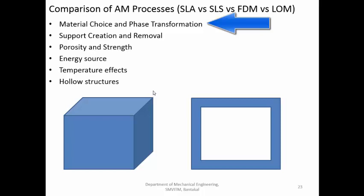Material choice refers to what materials can be used in a particular process, and what kind of phase transformation takes place. In SLA (stereolithography), we can mainly use only photo-polymers, and the phase transformation is from liquid to solid. In SLS, we can use all kinds of materials — polymers, ceramics, and metals. The phase transformation in SLS involves the powder being fused by laser action into a partial or fully liquid state, which then solidifies.